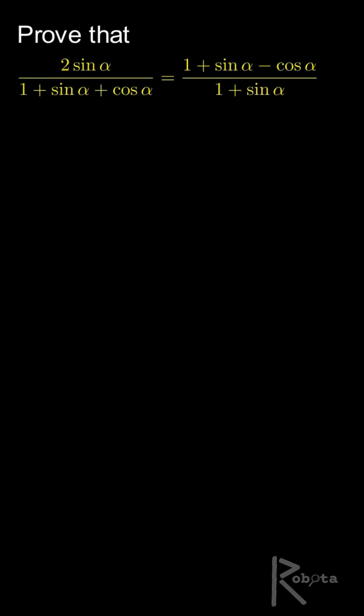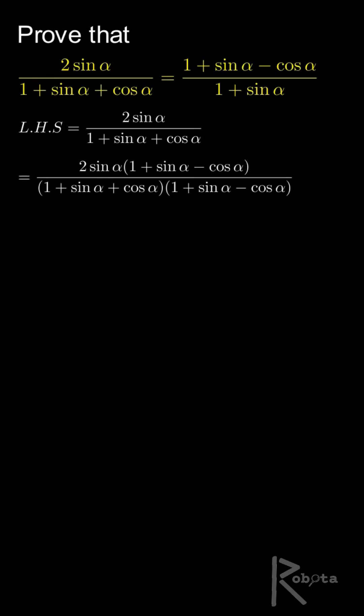We begin with the left-hand side of the equation which is 2 sin α divided by 1 plus sin α plus cos α. To simplify, we multiply both the top and bottom of the fraction by 1 plus sin α minus cos α.